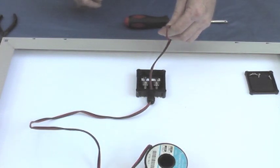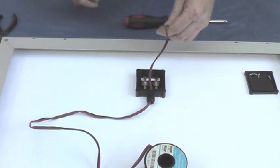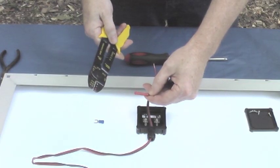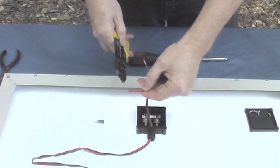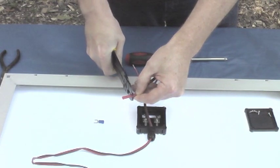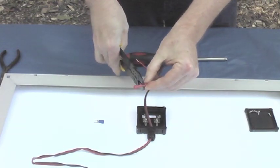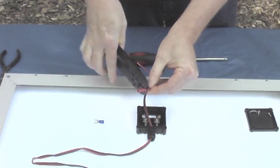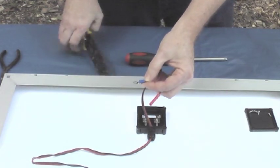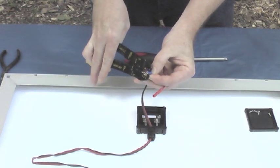We're just going to go ahead and strip the ends now and get ready to work. Now we're going to crimp a connector on the red wire first. That connector is going to go to the diode. Now we're going to put the blue connector on which is going to be for the negative terminal on the panel.